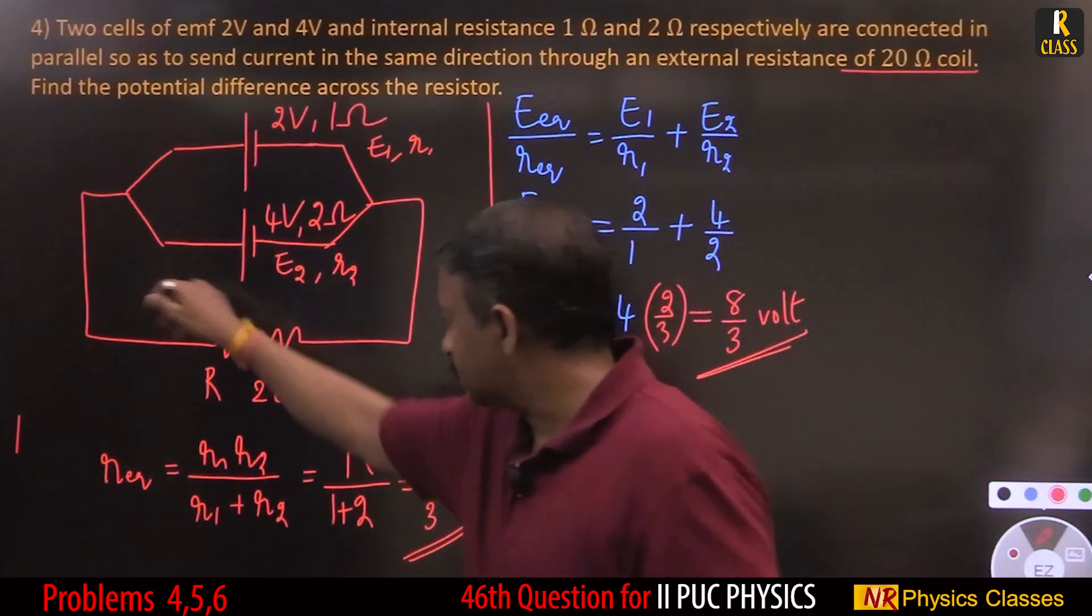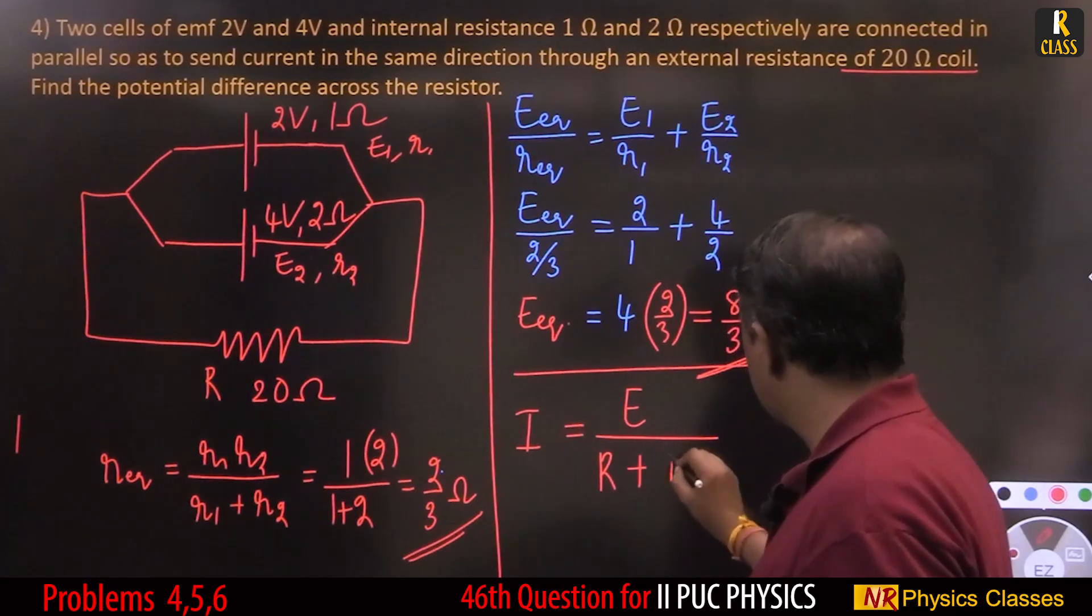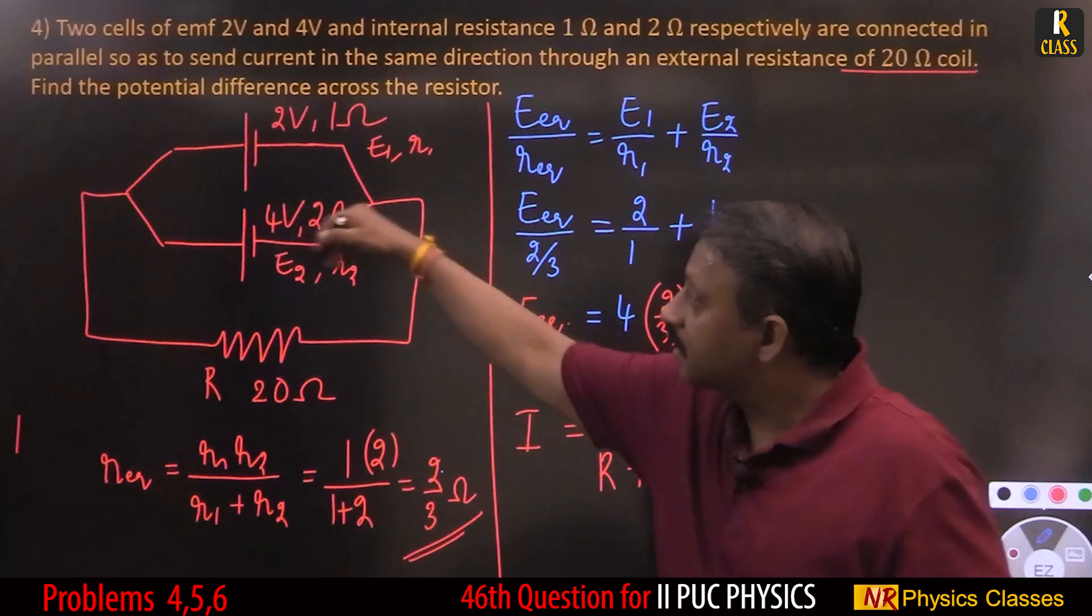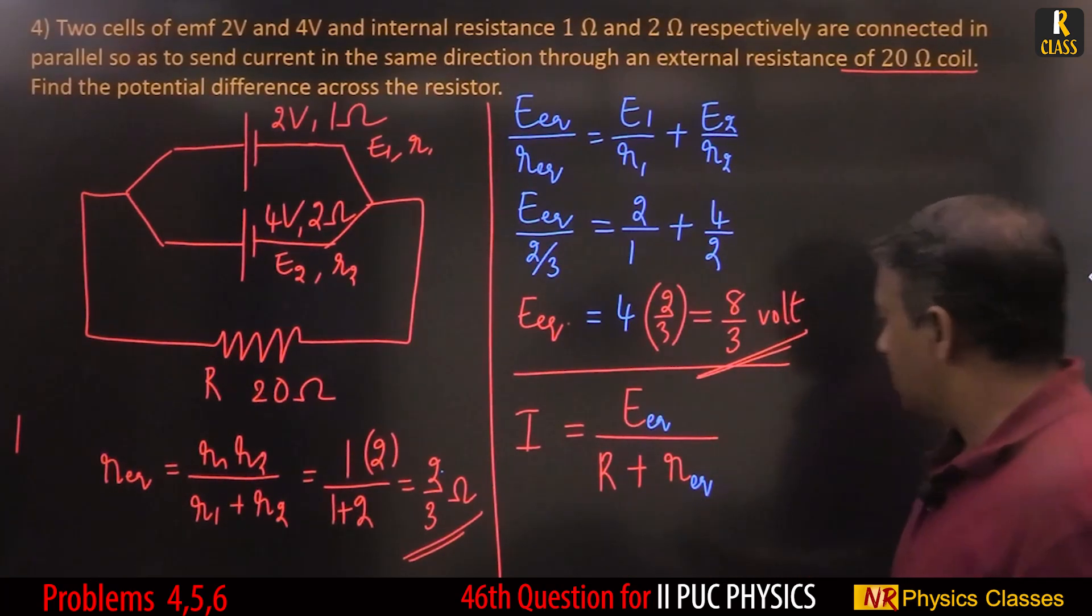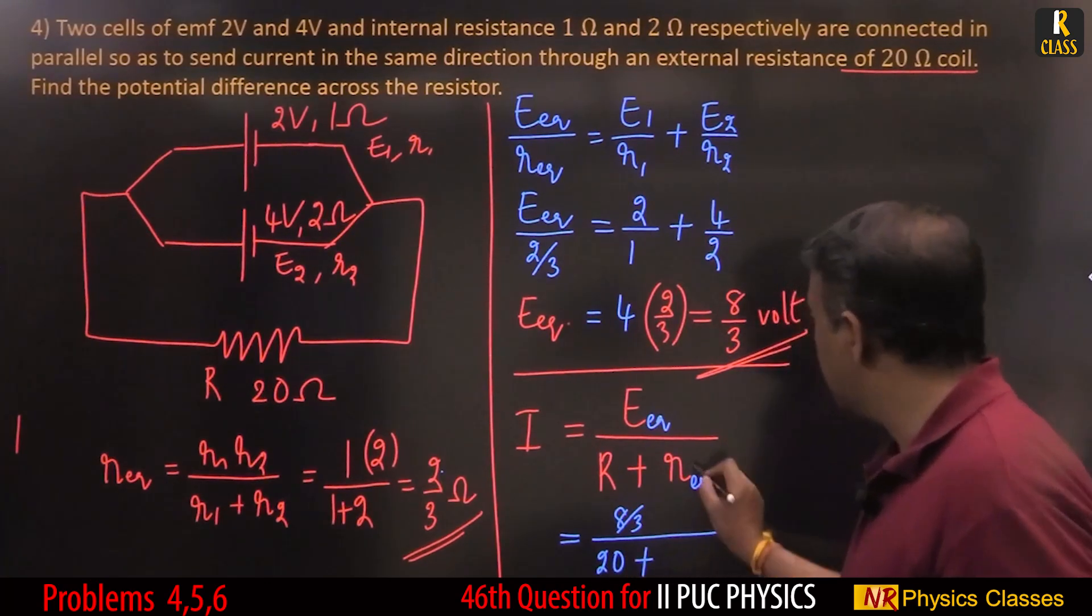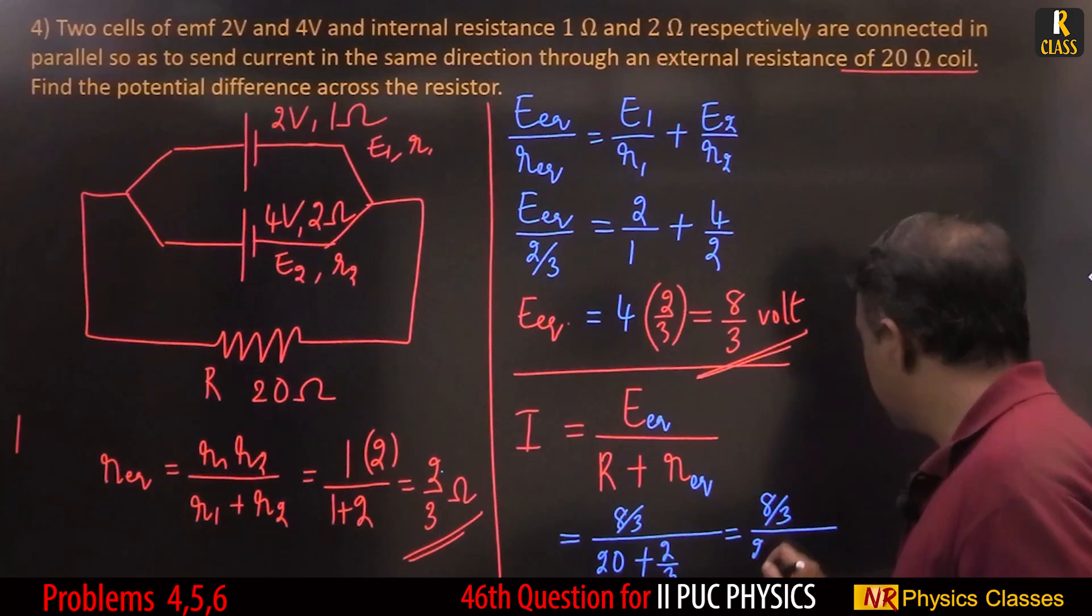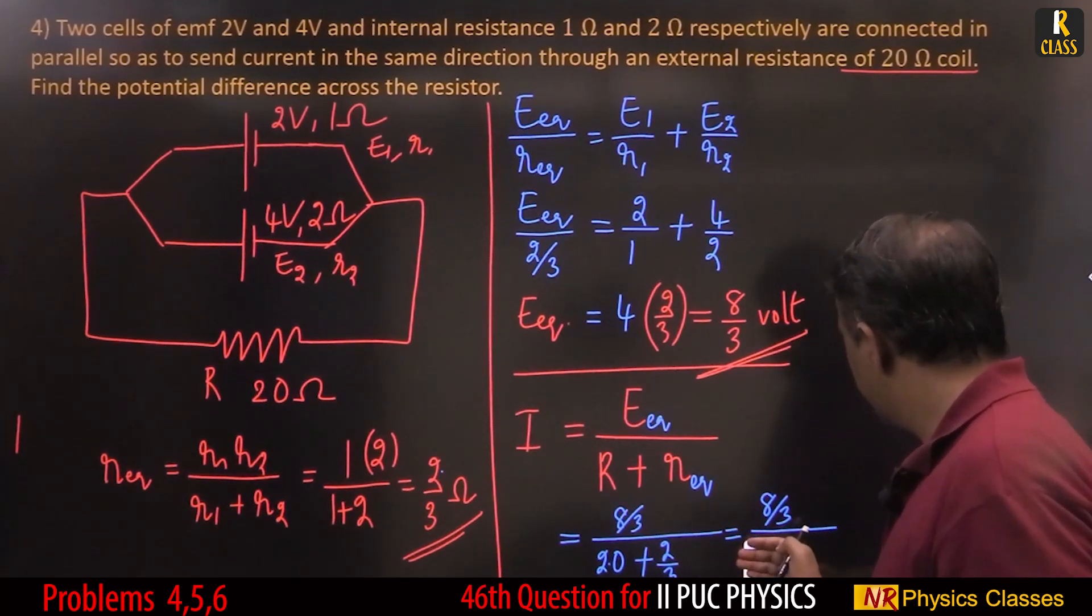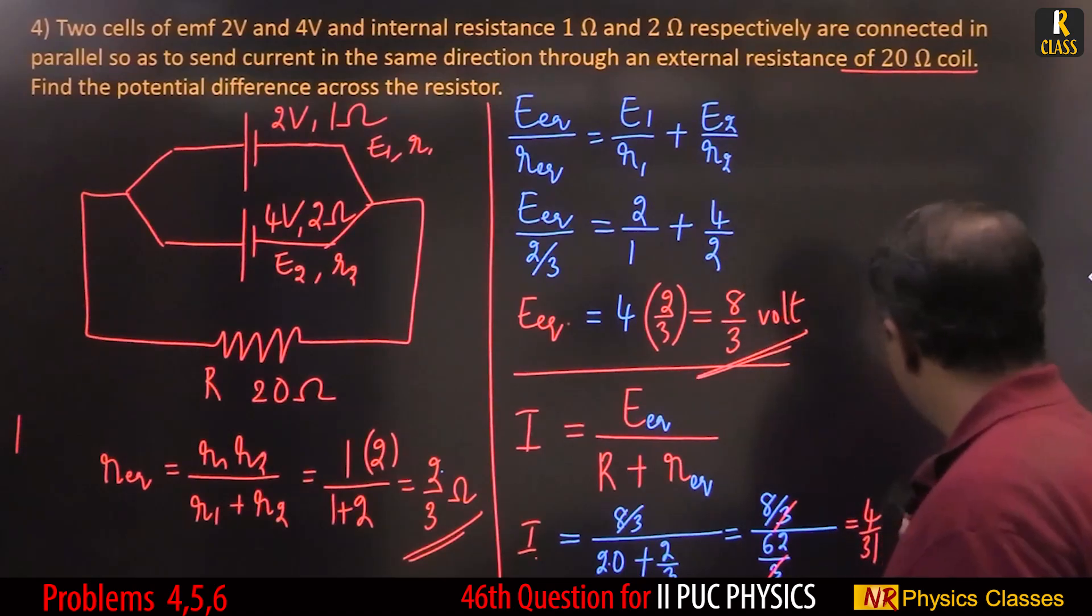Now let us find current. Current through the external circuit equals EMF by R plus r. This is 8 by 3 divided by 20 plus 2 by 3. That becomes 8 by 3 divided by 62 by 3, which equals 4 by 31. This is current I, 4 by 31 ampere.